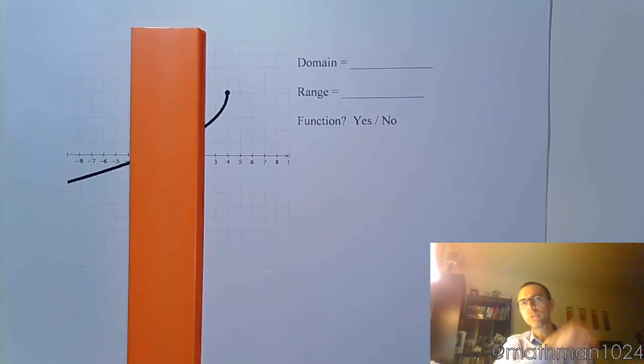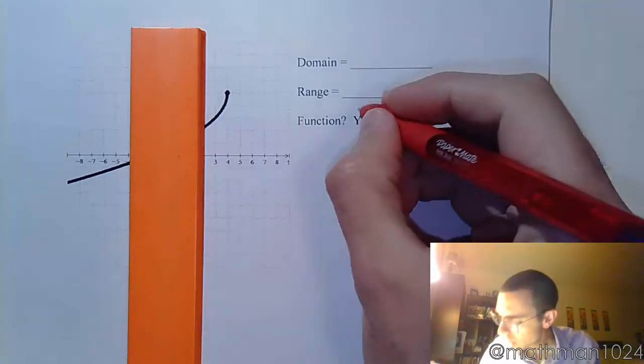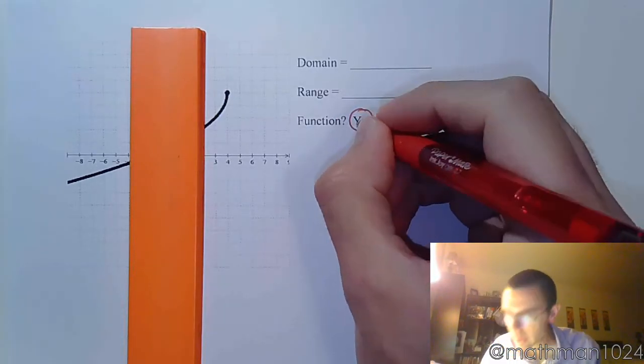But this is going to pass the vertical line test. This guy never curves back onto itself. Looks like he's trying to, but we stop him just before he gets a chance. So this is a function.